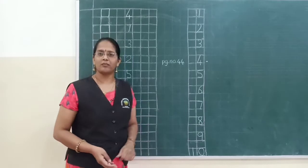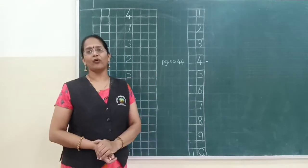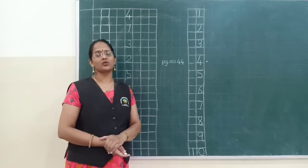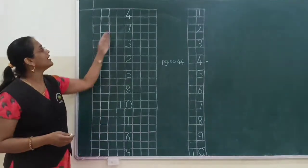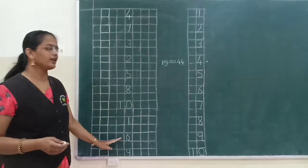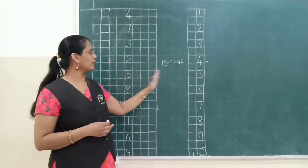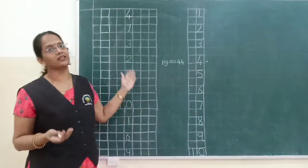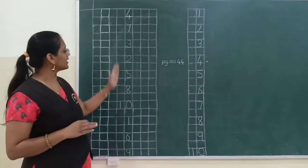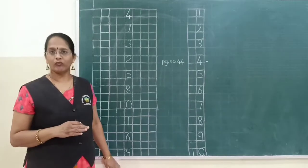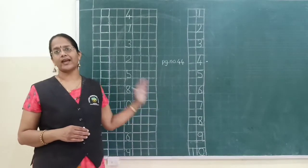So in your numbers book on page number 44, the before number question is there. You have to identify the before number. See here — is tarah se aapke book mein likha hai. I am taking only half portion of that page, page number 44. Afterwards we will take the other half portion. Sabse pehle hum log one to ten ki jo first four numbers hain, wo dekhenge, and afterwards we will solve the next half portion.